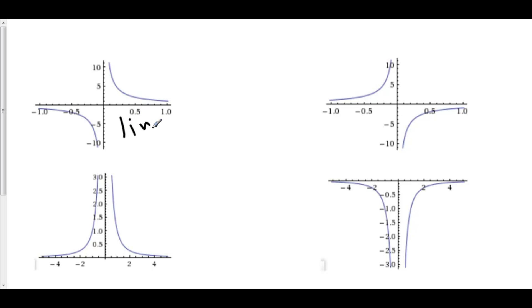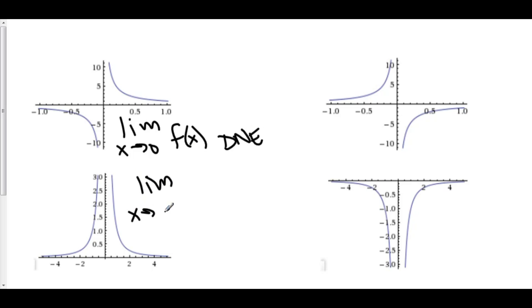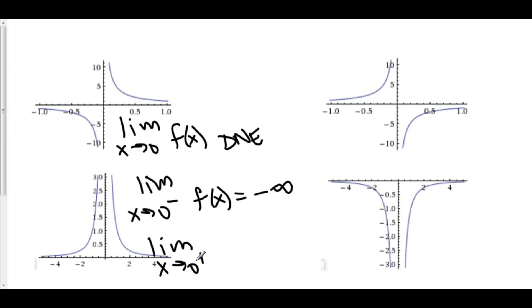The limit as x approaches zero of f of x does not exist. The reason for this is because the limit as x approaches zero from the left-hand side of f of x is equal to negative infinity, and the limit as x approaches zero from the positive side of f of x is equal to positive infinity. And because negative infinity does not equal positive infinity, the limit therefore does not exist.